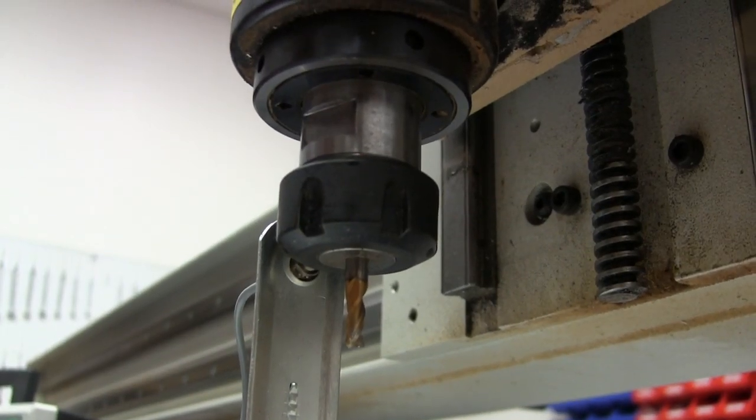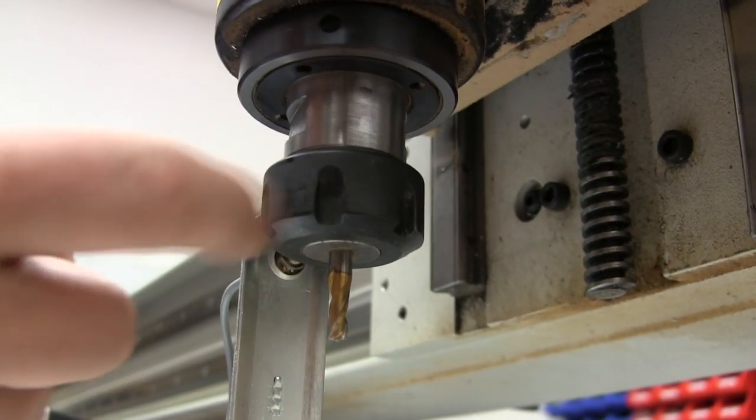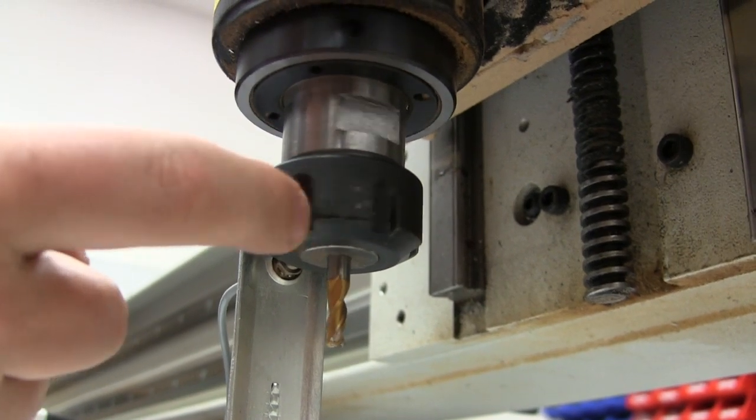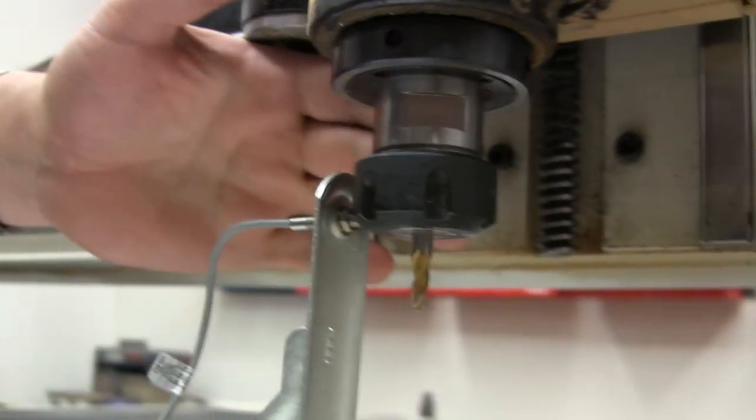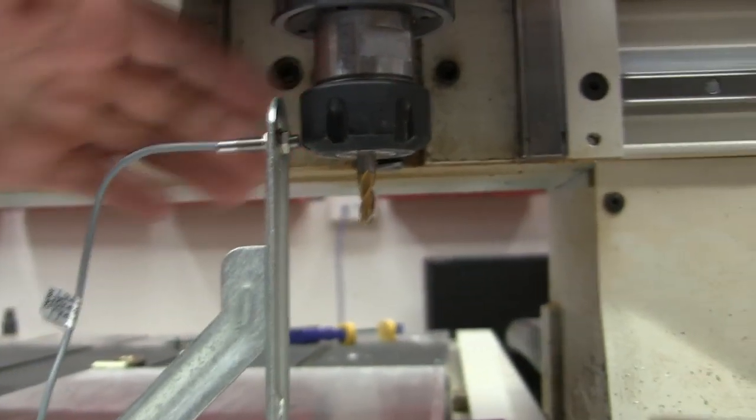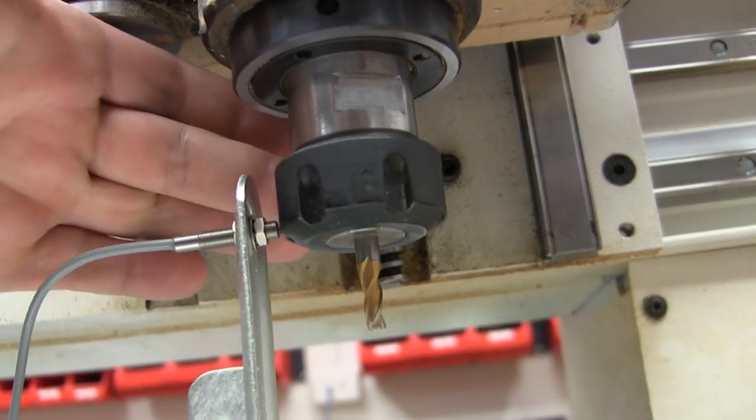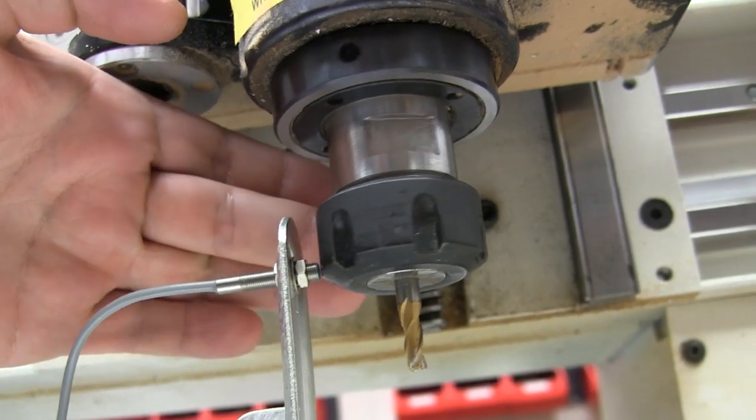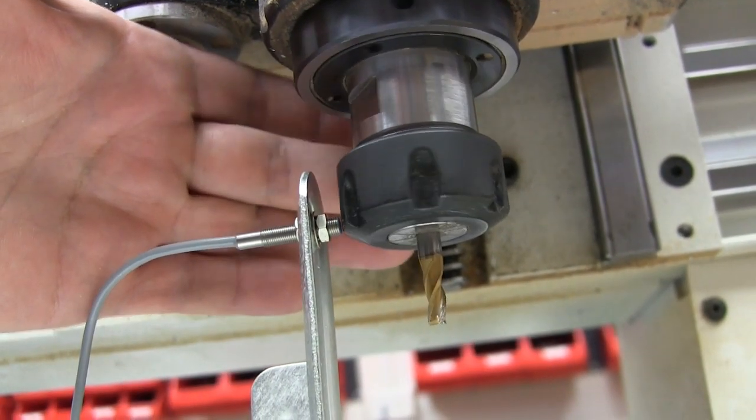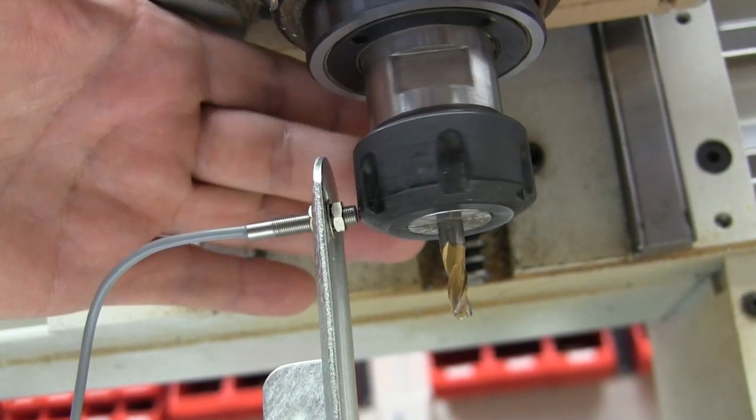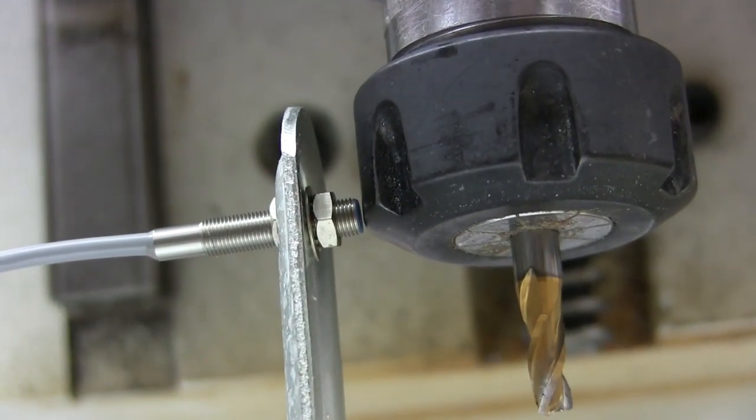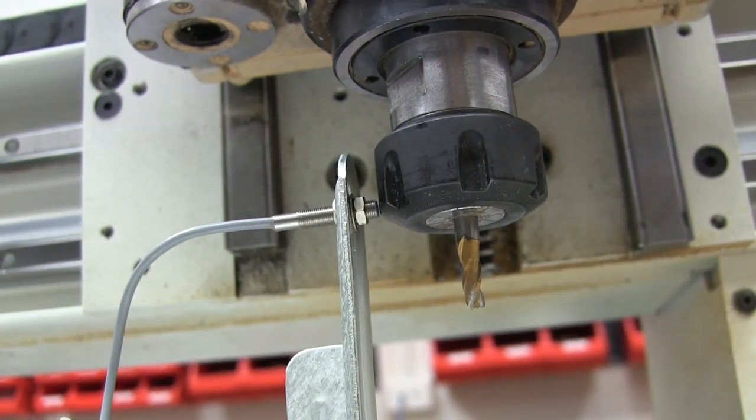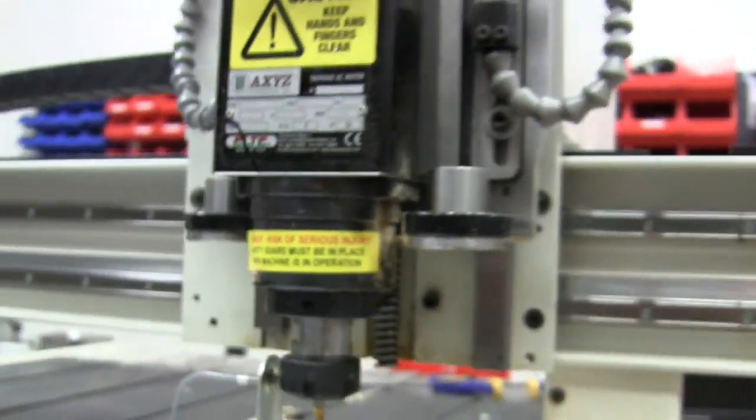So what we've got here is our CNC machine. As you can see on the chuck, you've got these holes. Now, if you come around to this side, you'll see that there's a very small gap between the actual chuck. It's going right past it there. So this is actually going to measure the pits.